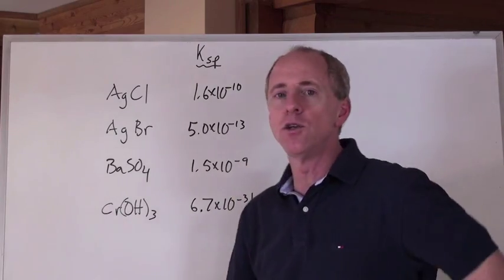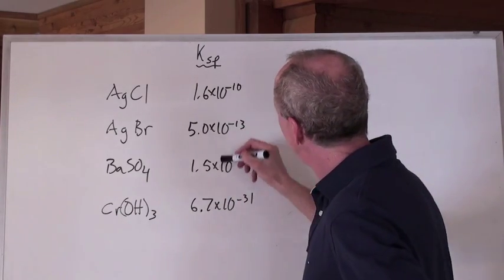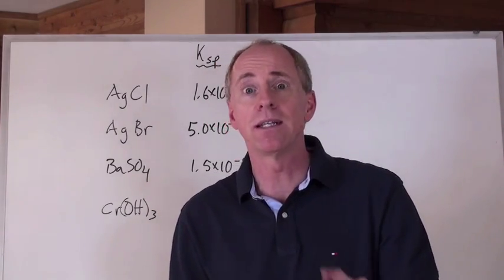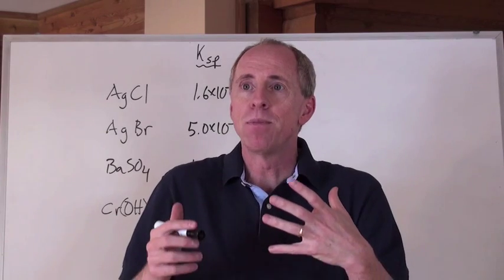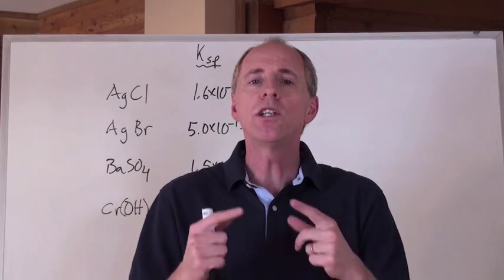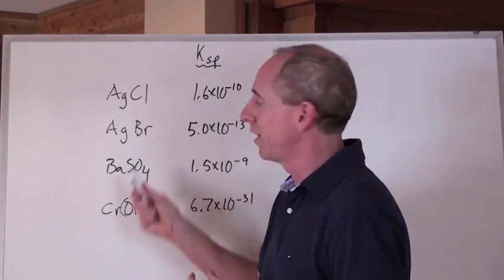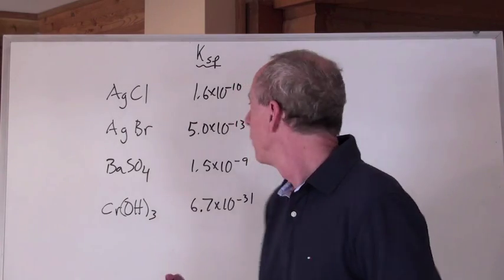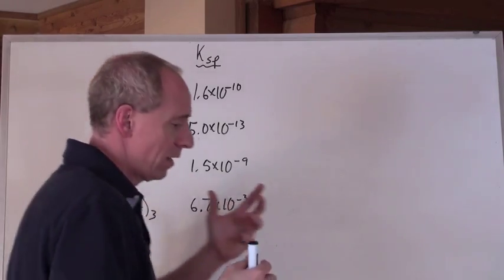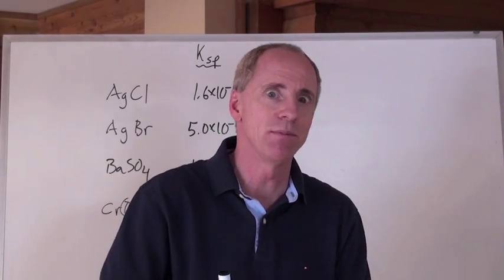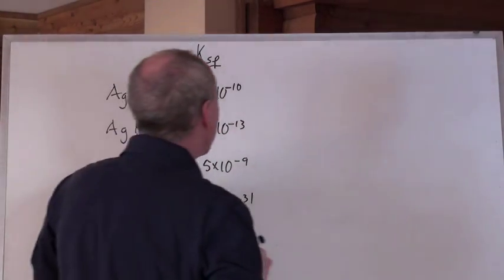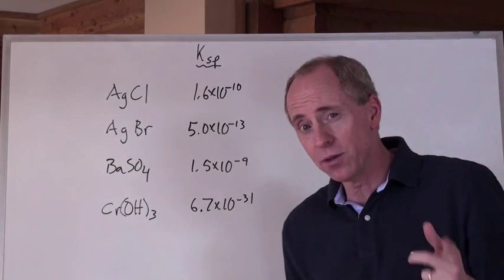Look at these first three. If I say to you, take a look at the KSP values for each of these chemicals — which of these chemicals has the lowest solubility? That means which one is the least dissolvable, which one really doesn't like to dissolve? Each one of these chemicals does this, and this is why you can directly compare them to one another.